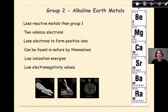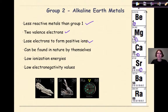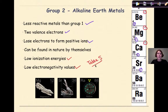Now let's talk about the group 2 metals, the alkaline earth metals. These are going to be less reactive than group 1. They have two valence electrons, and the electron configurations end with the number two as we go down the group. They lose electrons to form positive ions, specifically a plus two charge. These can be found in nature by themselves and will react with air pretty quickly to undergo oxidation. They have low ionization energies, low electronegativity values, and as we go down the group from beryllium all the way down, we'll see a decrease in ionization energy and a decrease in electronegativity.